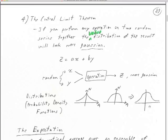That's actually how to get a random number set that has a Gaussian distribution — the more sources you combine, the more Gaussian it becomes.